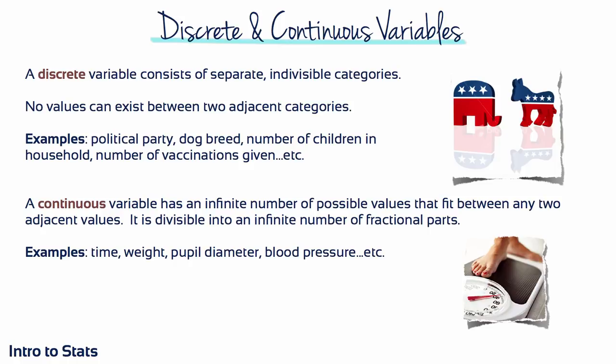Continuous variables, on the other hand, can take on a full range of values — numbers out to several decimal places are fine, meaning an infinite number of potential values exist. For example, one person might complete a task in 12.839 seconds, and someone else in 14.870 seconds. The possible values are continuous, limited only by the number of decimal places we choose to use.